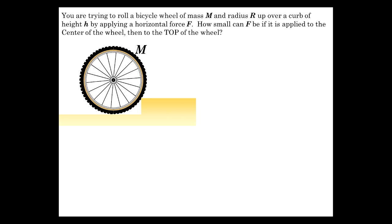The last example I'll show you here is an interesting one involving a bicycle wheel being rolled up over a curb. So here we have the bicycle wheel, mass M, radius R, and this curb is less than radius R, or this problem would have no solution.